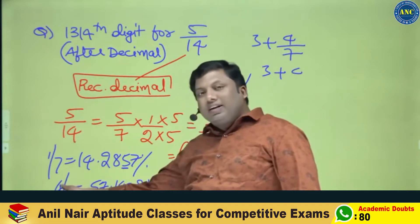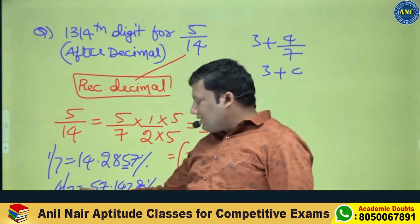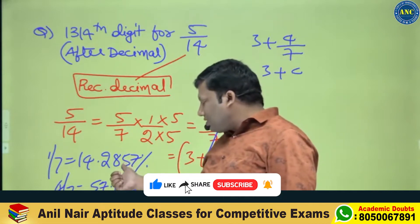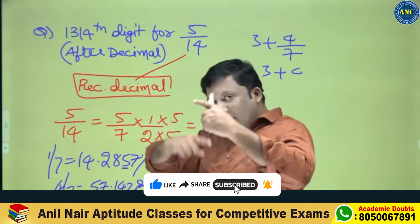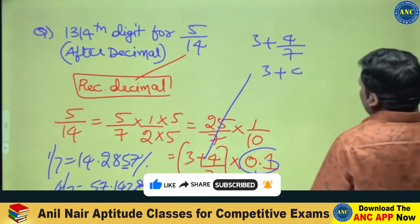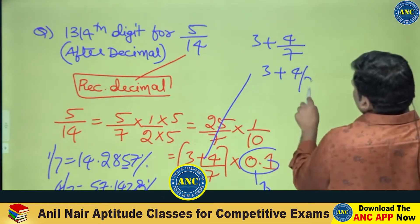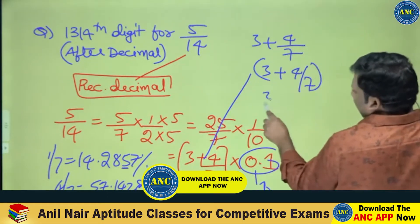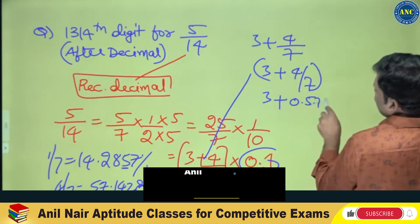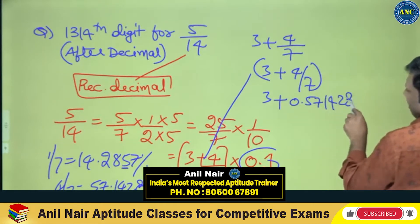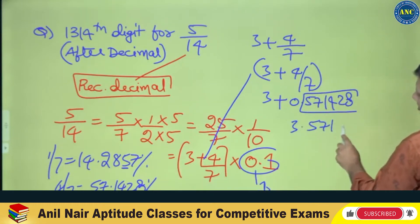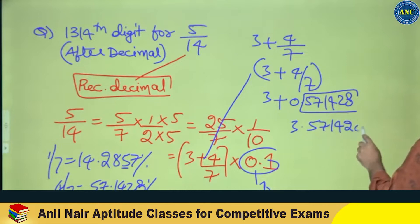Take the numerator 4, 4 tens are 40, 7 goes 5 times in 40 — where is the 5 here? This one and the next digit. The same 6 digits will get repeated. That means 3 plus 4 by 7 is 3 plus 0.571428, and these 6 digits only will get repeated: 571428.